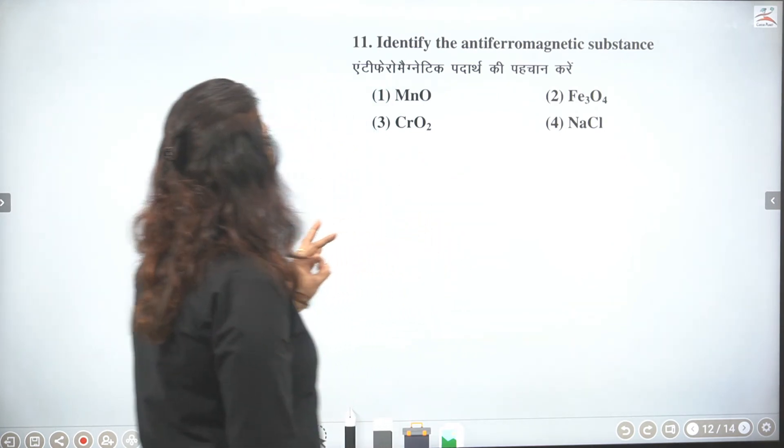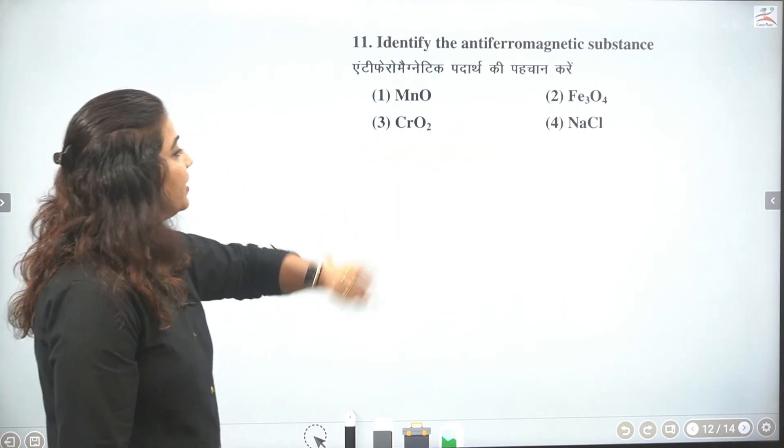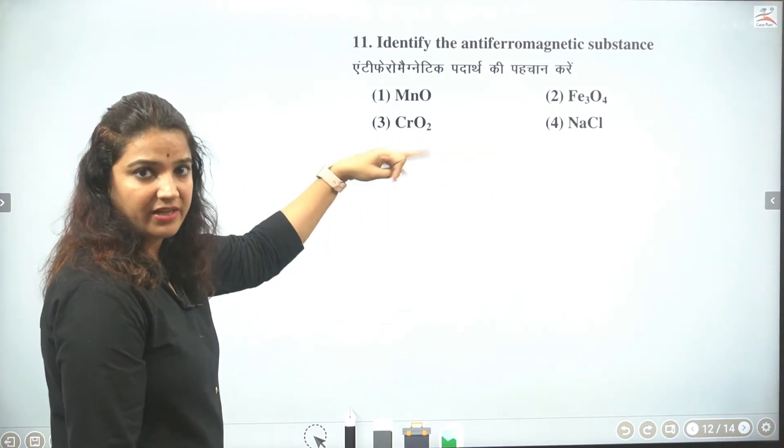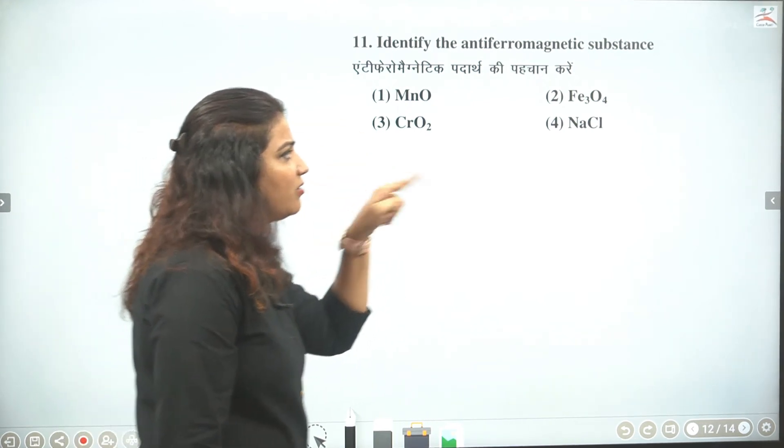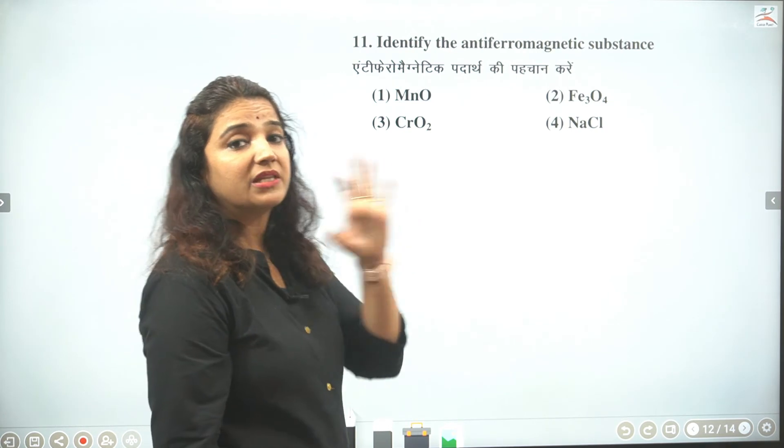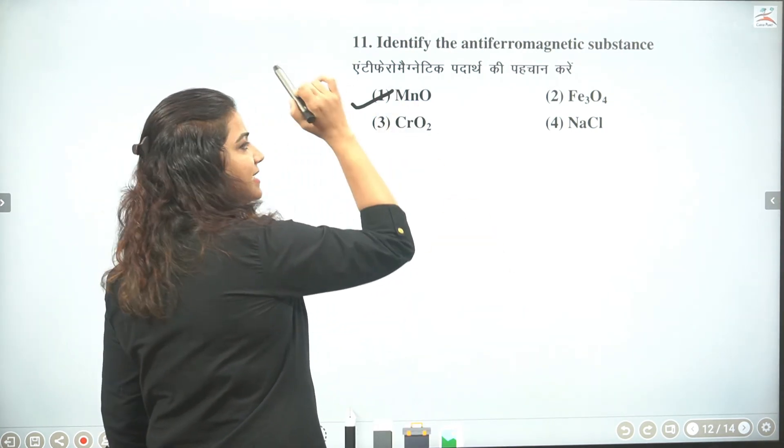Toh hum kahenge dekho. O ferrite hai toh ferrimagnetic mein aayega. Yeh toh aapka ferromagnetic hai. Magnetic tape banane ki kaam aapka CrO2. Aur NaCl jo hai yeh aapka hota hai diamagnetic. Hai na wale te prati chumbakiya. Toh yeh teeno answer nahi hoga. So anti-ferro jo hai that is MnO.